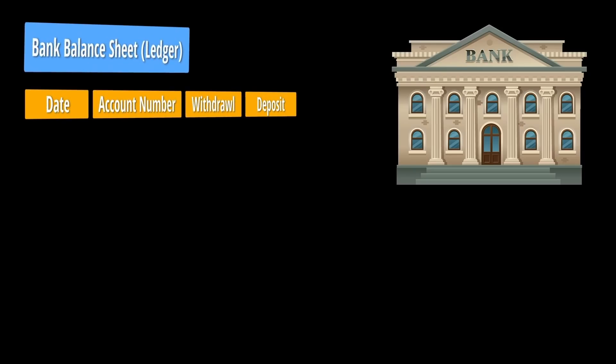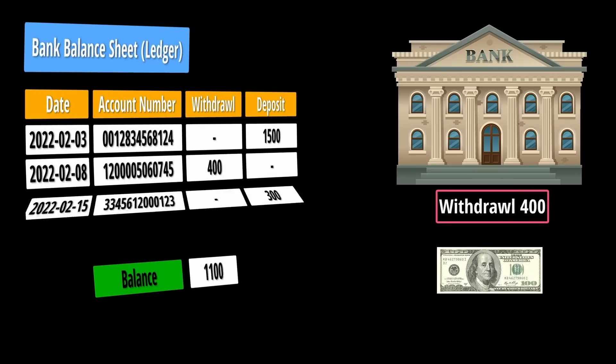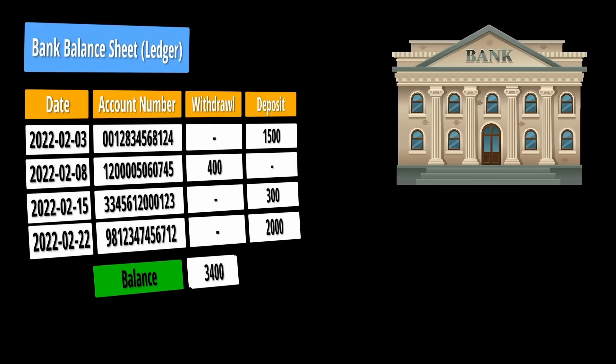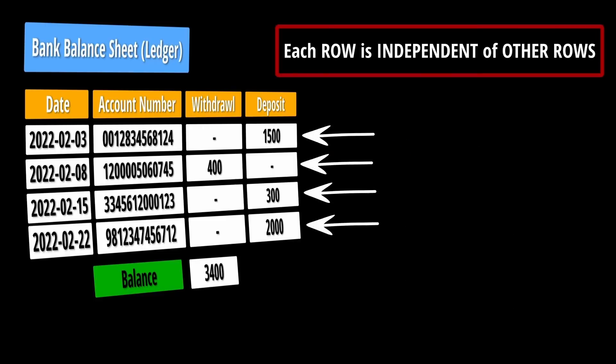We will take a bank transactions example here. Whenever money is deposited or withdrawn from your bank, a transaction is created. The bank uses database software to store this transaction, and the balance sheet of the bank is updated based on the money deposited or withdrawn. As you can see, each transaction row here is independent of each other.